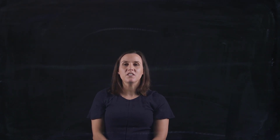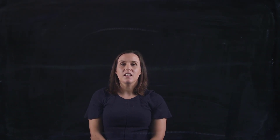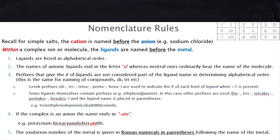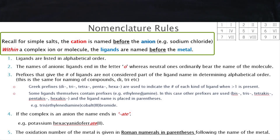Welcome to another video. In this video we're going to be looking at naming ligand complexes. These are quite complicated to name. The rules are that for these complexes we write the cation name first and the anion name second, similar to what we do for ionic compounds such as sodium chloride, where we write the cation and then the anion. We do the same thing for transition metal complexes.